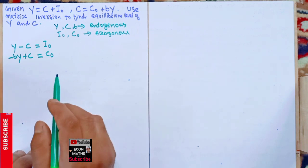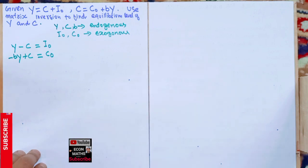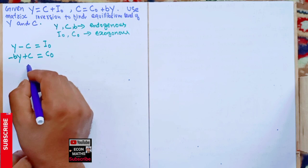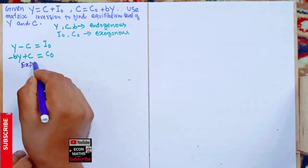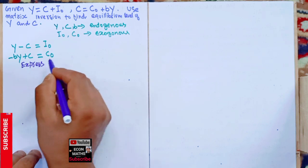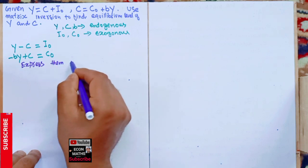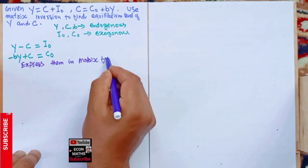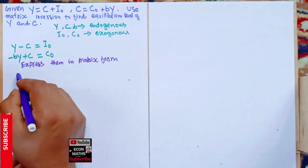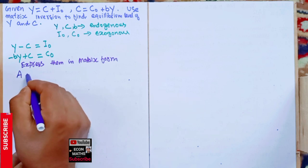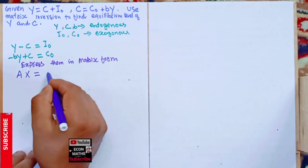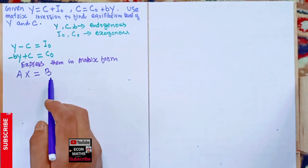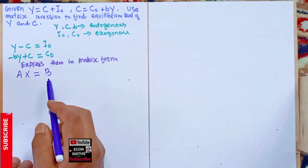Now we will form a matrix and express these equations in matrix form. The matrix form is given by AX = B, where A is the coefficient matrix, X is the solution vector, and B is the vector of constant terms.